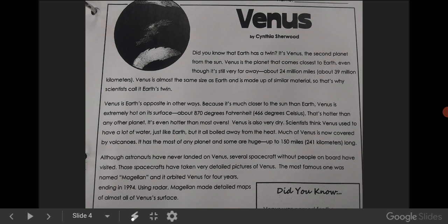Venus is Earth's opposite in other ways. Because it's much closer to the Sun than Earth, Venus is extremely hot on its surface. About 870 degrees Fahrenheit, or 466 degrees Celsius. That's hotter than any other planet. It's even hotter than most ovens.